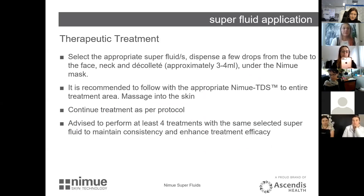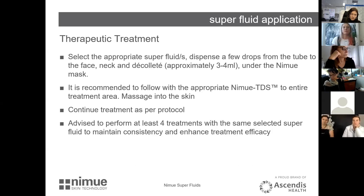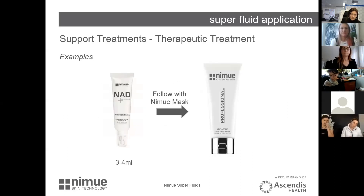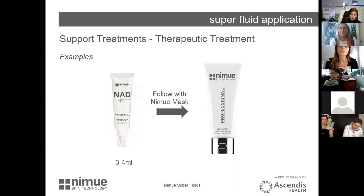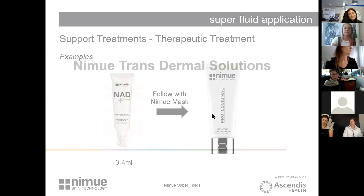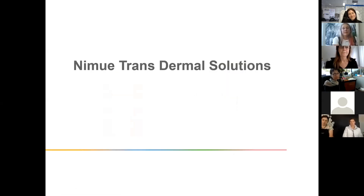For a therapeutic treatment, you can use super fluids in your peel, for microneedling, or as a serum under a mask. Select the appropriate super fluid, dispense a few drops, apply it onto the skin, and then put your mask over the top. For example, you can use three to four mils of NAD and then apply whichever treatment mask you want over the top.